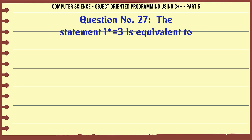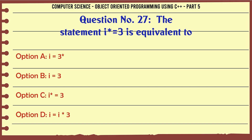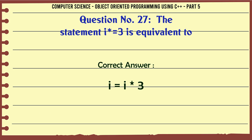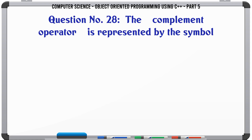The statement i += 3 is equivalent to. A. i + 3. B. i + 3. C. i + 3. D. i = i + 3. The correct answer is: i = i + 3.